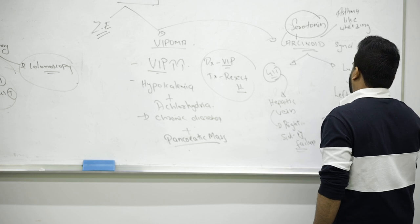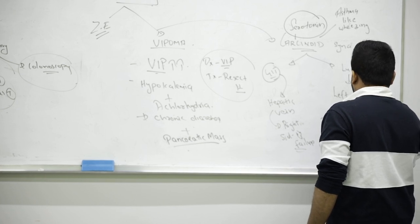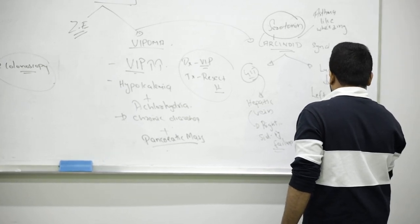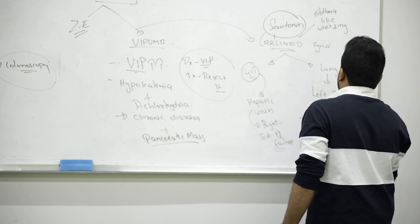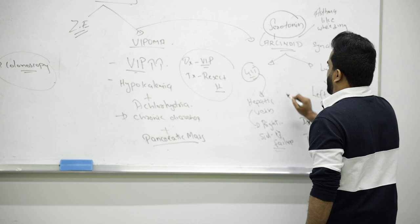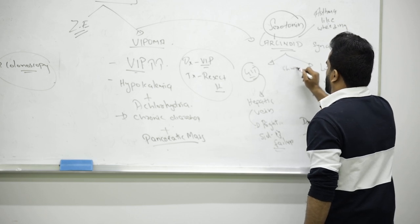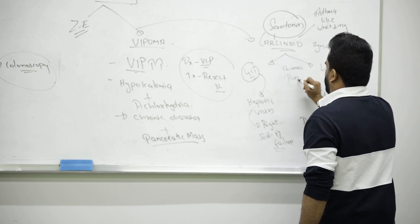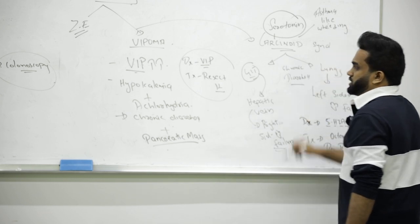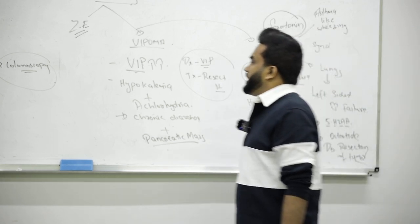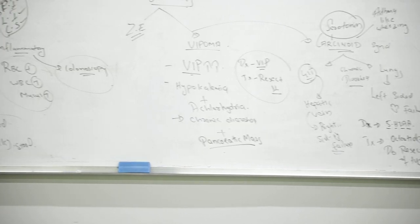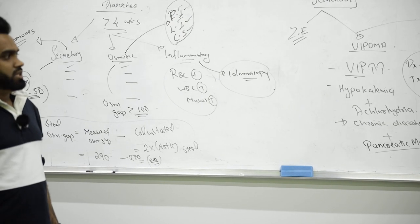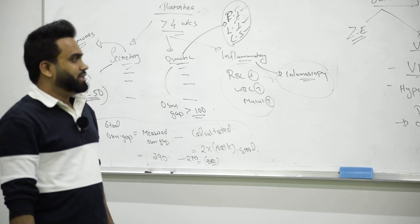Then we can give octreotide and do the resection of the tumor. This also causes a type of chronic diarrhea, chronic secretory diarrhea. Remember, these are the main examples of chronic secretory diarrhea where osmolarity gap is less than 50. Remember about carcinoid, it is because of more serotonin.